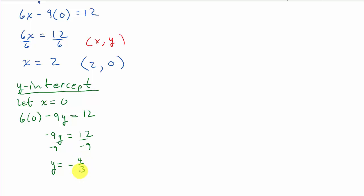And so I get y equals negative, and then 12 over 9 will reduce to 4 thirds. So my y intercept is the point. And just like up here, it's an x, y coordinate.